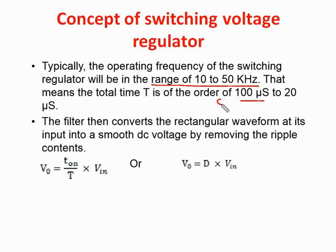If we set the duty cycle to 50%, that means the switch turns on for 50 microseconds and remains off for 50 microseconds out of a 100 microsecond period. To increase the duty cycle to 80%, we turn on the device for 80 microseconds and keep it off for 20 microseconds. By changing the duty cycle, the filter converts the rectangular waveform and we get the desired output at the output side of the switching voltage regulator.